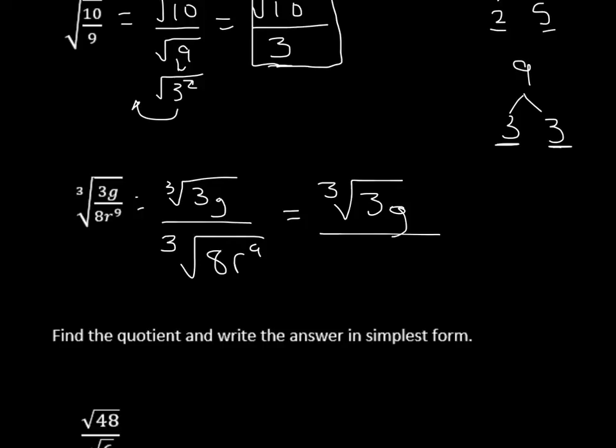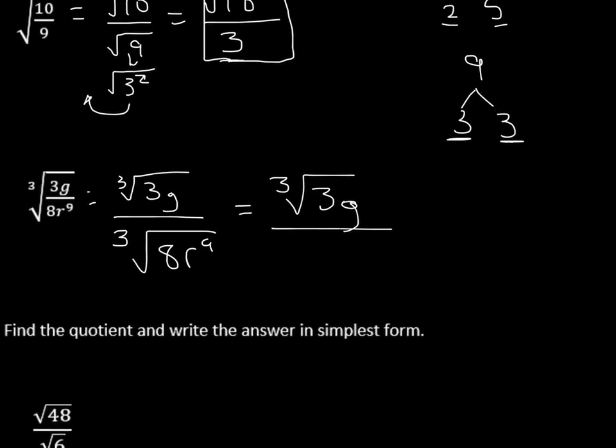3g. Don't forget your cube root there. So we have 3g on top, and then on the bottom, this is where we can simplify some stuff. I'm going to scoot over a little bit. So first we'll take a look at 8. We know 8 is 2 and 4. 4 is 2 and 2, right? So what do we have up in the top? You see, now we have a cube root. We need 3 of something. So this would become 2 to the 3rd r to the 9th.